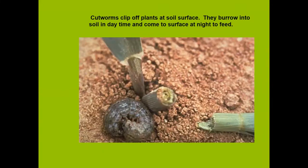The first pests I'm going to talk about on soybeans are cutworms. Cutworms clip off the plants at the soil surface or just above the soil surface. They burrow into the soil in the daytime and come out to feed at night. Sometimes they'll hide underneath the residue between the rows, and they are becoming more and more of a problem as we go to more cover crops during the winter prior to planting.